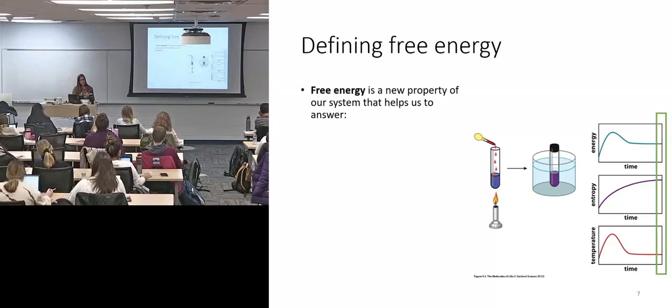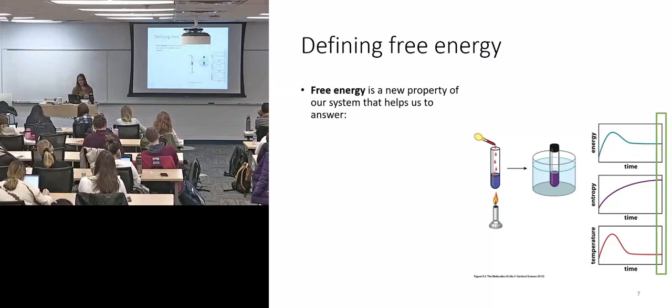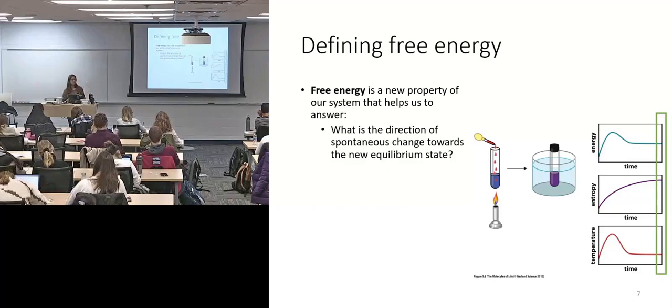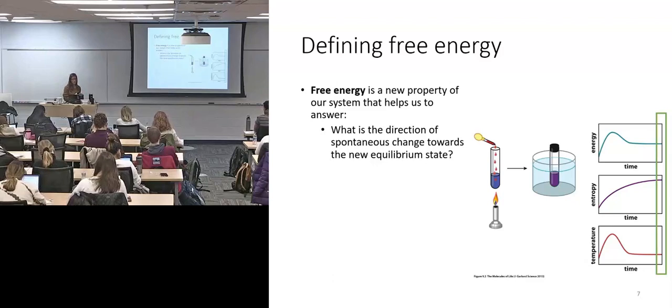Free energy is its own new thing that kind of wraps them all together. And most importantly, free energy is sort of a predicting property. It lets us answer some questions about the system. Most importantly, what direction would spontaneous change want to happen to reach a new equilibrium state? So, you can look at a system and predict, one, is it at equilibrium? And two, if it's not, where does it want to go or what does it want to do to reach it? And free energy and really the sign of the change in free energy dictates this.